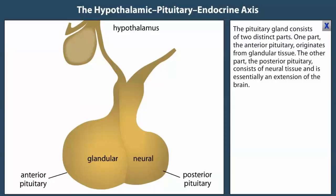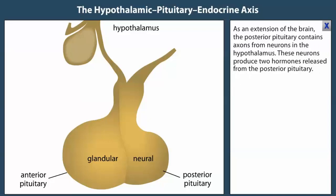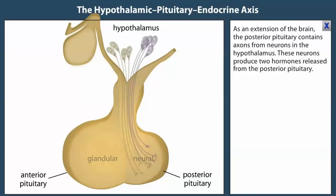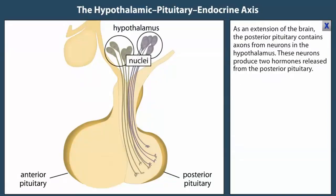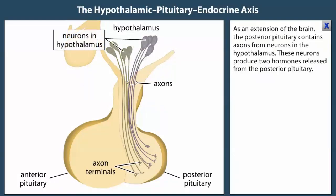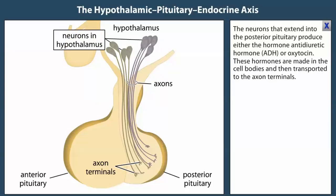As an extension of the brain, the posterior pituitary contains axons from neurons in the hypothalamus. These neurons produce two hormones released from the posterior pituitary: either the hormone antidiuretic hormone, ADH, or oxytocin.